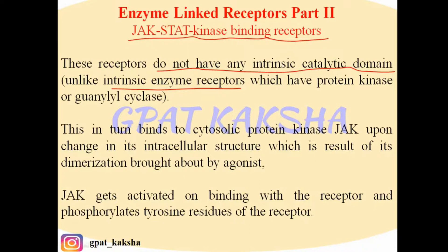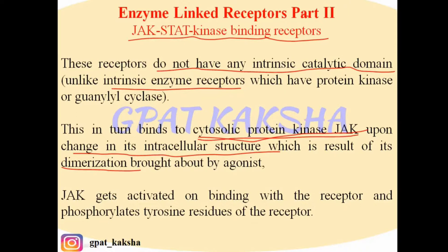These JAK-STAT kinase binding receptors bind to cytosolic protein kinase JAK. Whenever the agonist binds to the JAK-STAT kinase receptors, they bind to cytosolic protein kinase. Upon binding of agonist, agonist-induced dimerization of these receptors occurs and brings a change in the intracellular structure. Due to this change, these receptors become capable of binding with Janus kinase, which is a kind of protein kinase.